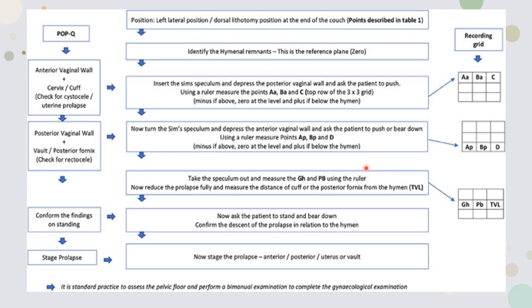To examine a patient for POPQ classification: position should be left lateral dorsal lithotomy at the end of the couch. First identify the hymen and its remnants, as this is the reference point at zero. Insert the Sims speculum and depress the posterior vaginal wall, then ask the patient to push. Confirm this is the maximum bulge or prolapse felt. Using a ruler, measure points Aa, Ba, and C — minus if above zero, zero at the level, and plus if below the hymen.